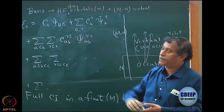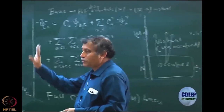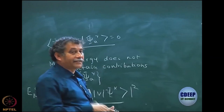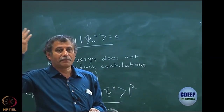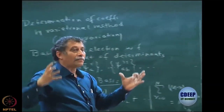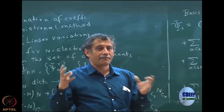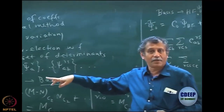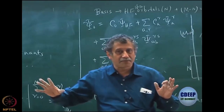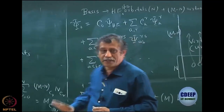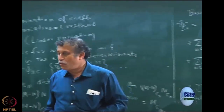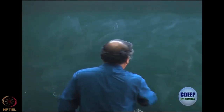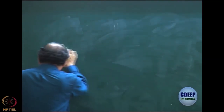Brillouin's theorem simply says the Hamiltonian matrix element is 0, and we will see how that affects the CI equations. We had written down the CI equation for the linear variation problem: construct the Hamiltonian matrix in the basis and diagonalize. The same thing we will do here — my basis is only these determinants. But I will re-derive the coefficients in a systematic manner using a variation problem to see what these coefficients are.